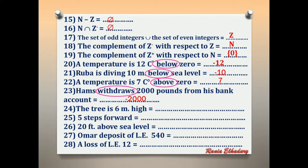Number 24: the tree is 6 meters high. We have the word 'high.' High is positive. So the answer is positive 6.